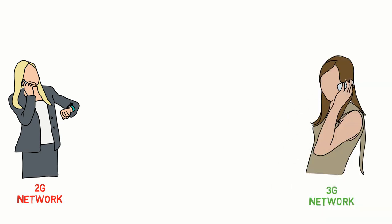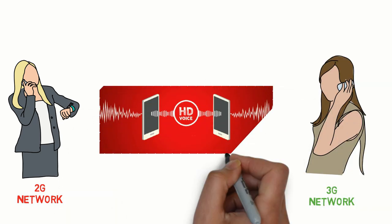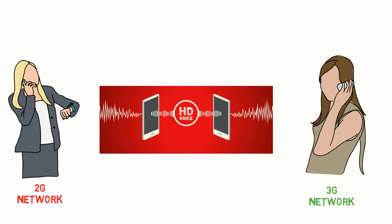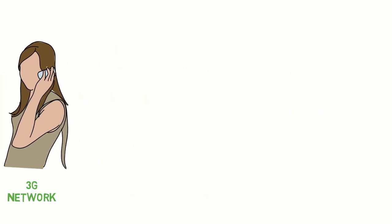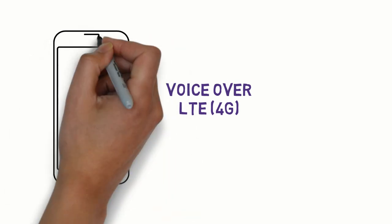Do you know there is a better way to make or receive calls using your normal handset? Nowadays, you can make crystal clear HD calls on your phone with VoLTE, also called voice over LTE, on a 4G network.